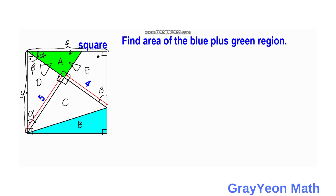Since the two triangles are congruent, their areas are equal. So A+E equals A+D in area. Since the A portion is common to both, the area of D is equal to the area of E.